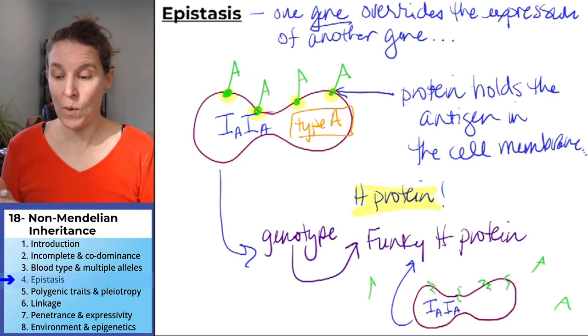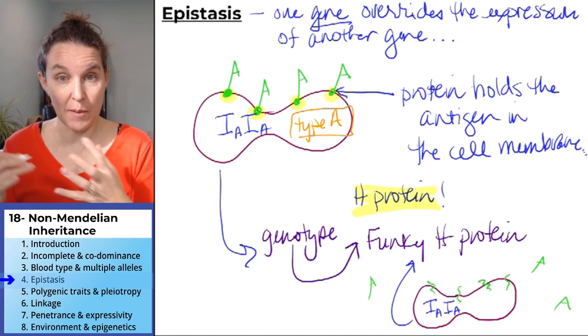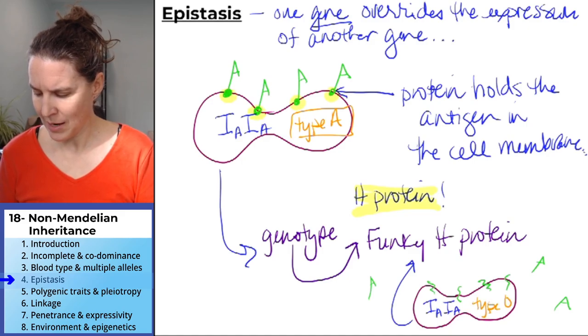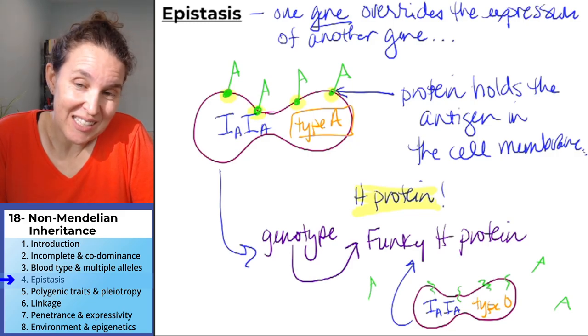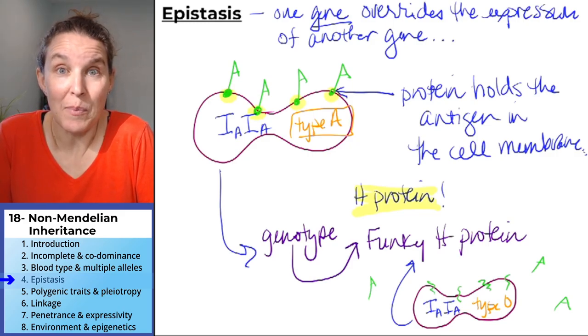And now we have what's my phenotype? Phenotype is what you look like. What's my phenotype? Type O. They have the genes to code for type A blood.